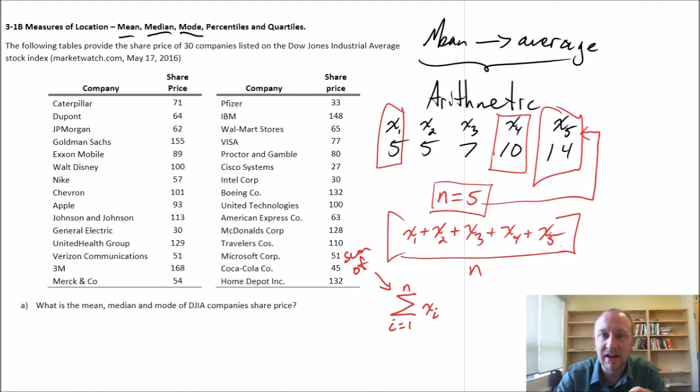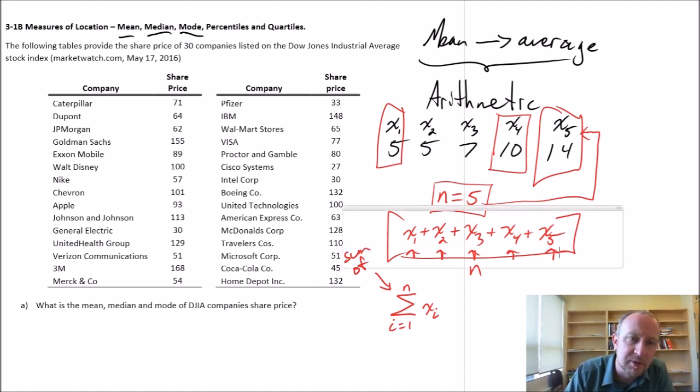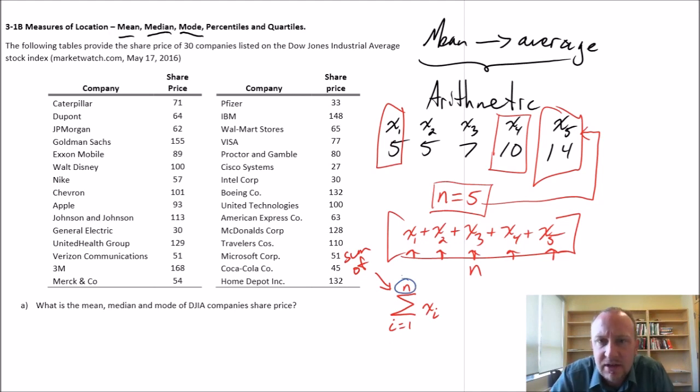This is just a shorthand way of writing what I've got in the numerator. It's the sum when i equals one, two, three, four, and five, all the way to n representing however many observations we have in that data set. Finally, once we take the sum and we've added all of these observations together, we divide by n, and that's just the same as what we've done here.